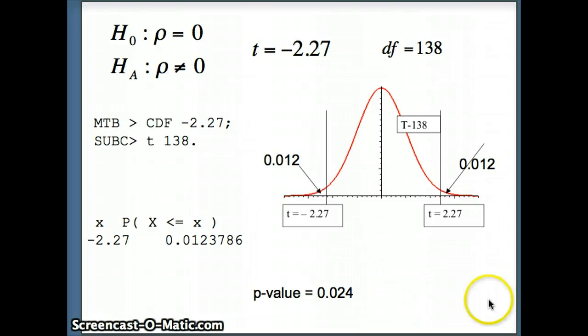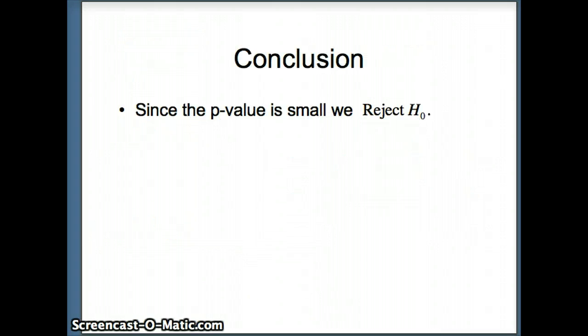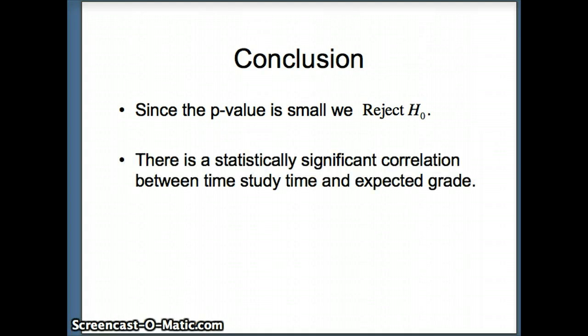Which we would say usually means it's a small p-value. So we're going to say since the p-value is small, we want to reject H-naught. And then we could say there is a statistically significant correlation between study time and expected grade.